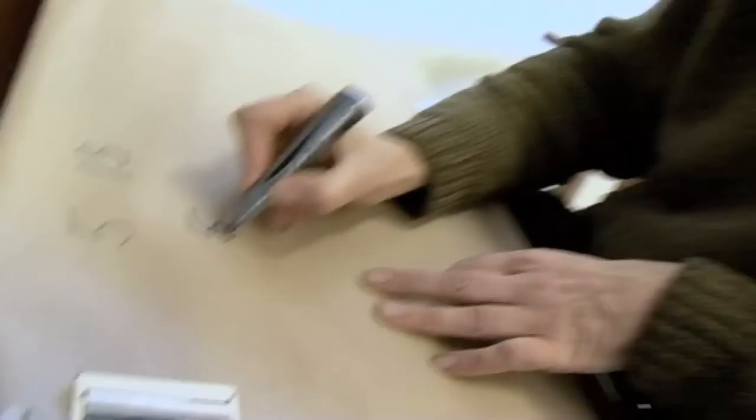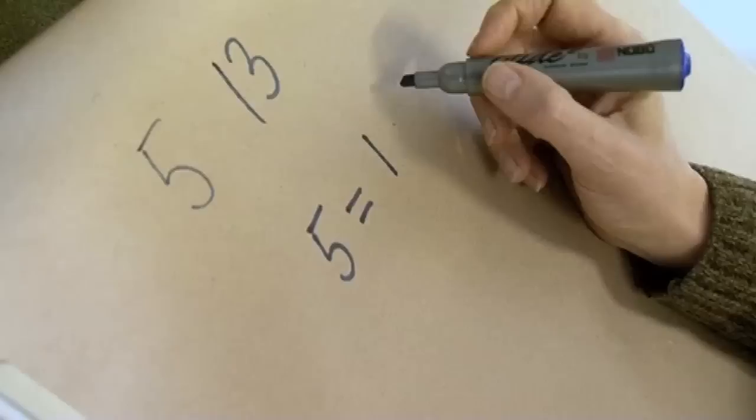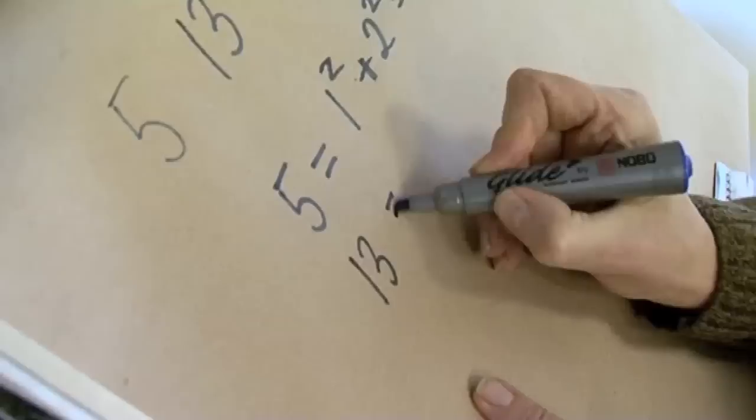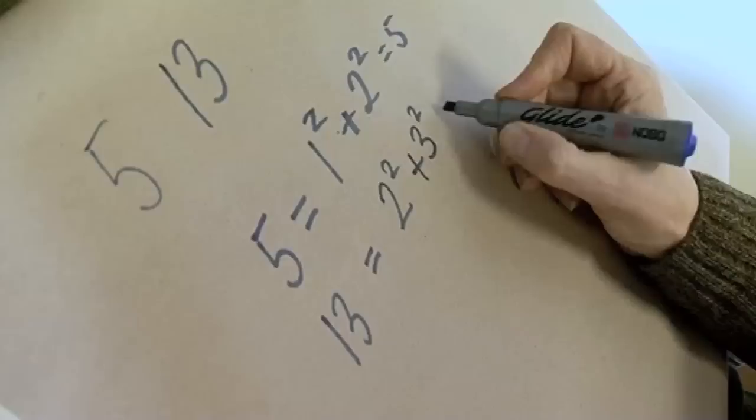If we look at five, then we can write five as the sum of two squares, so one squared plus two squared is equal to five. Now if we take thirteen, see if we can work that one out. Well, thirteen is nine plus four, so four is just two squared, and three squared is nine.